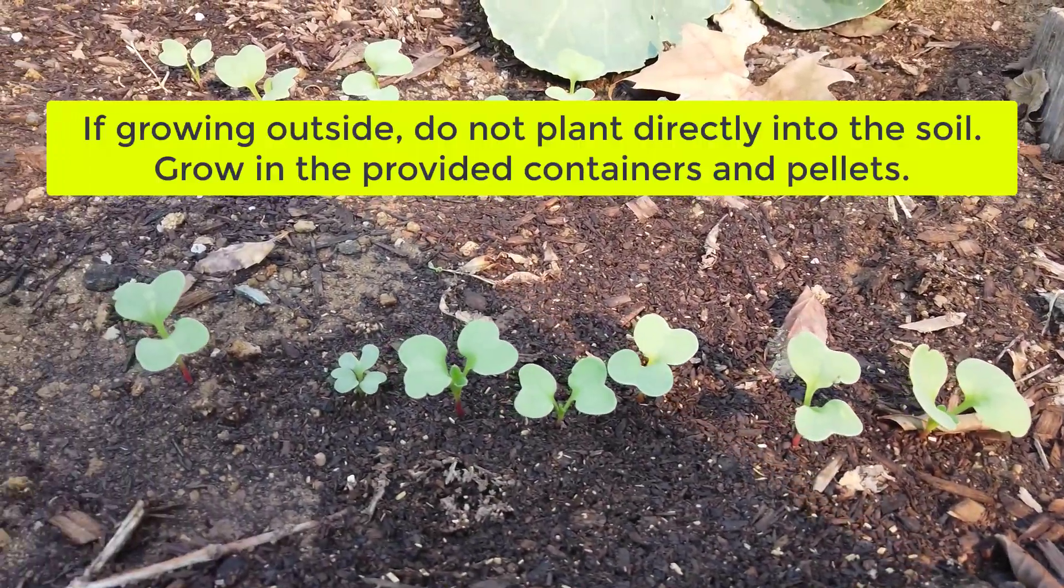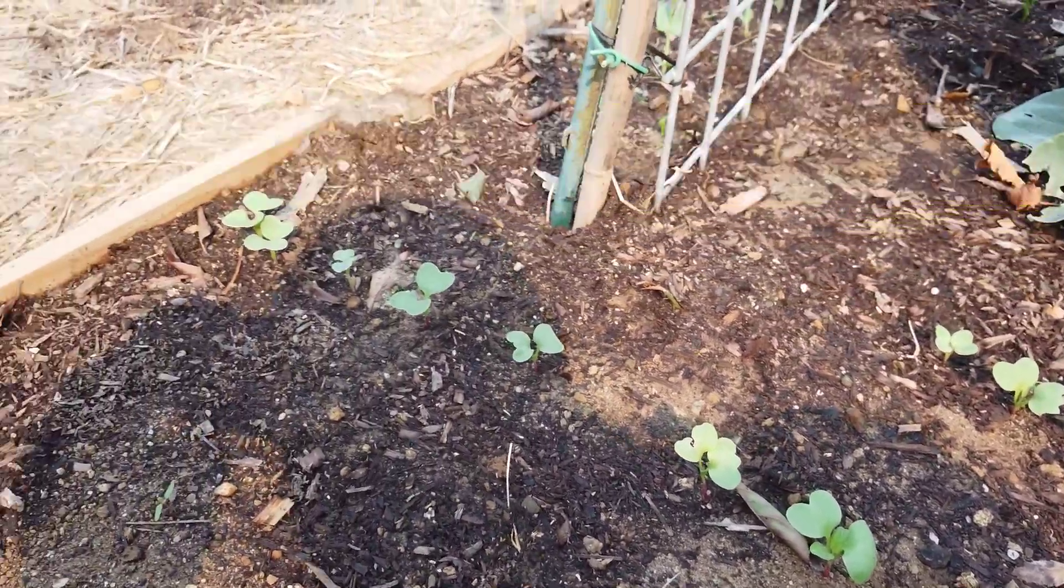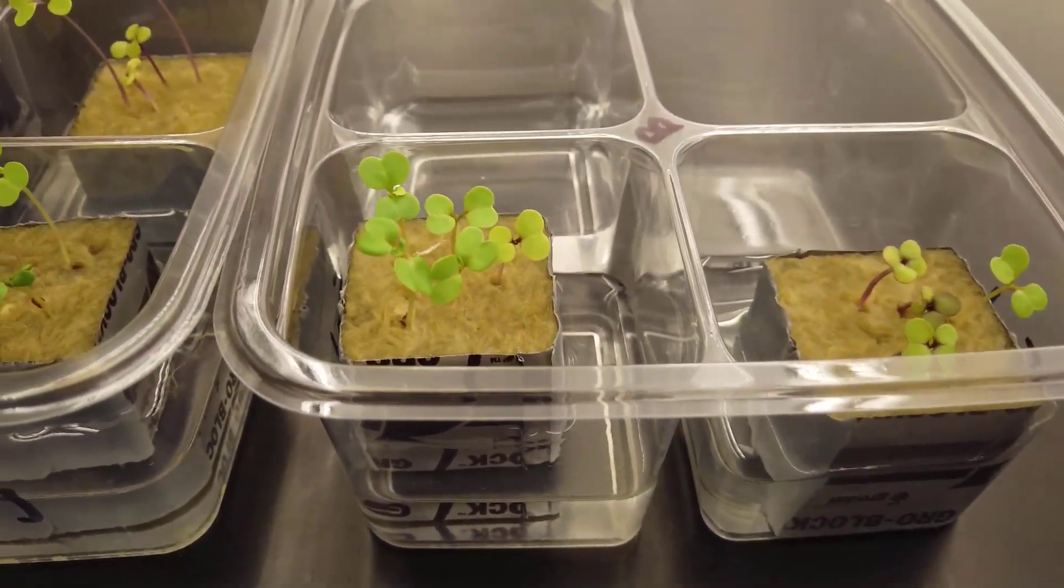You may also choose to grow them outside, but check on them every day as they tend to dry out in the open air. The plants will sprout in a few days. Set a reminder to check on the water in 3 days.